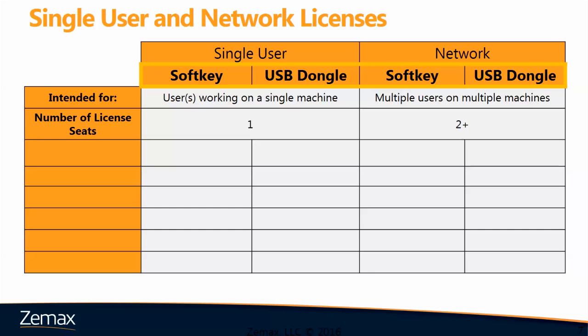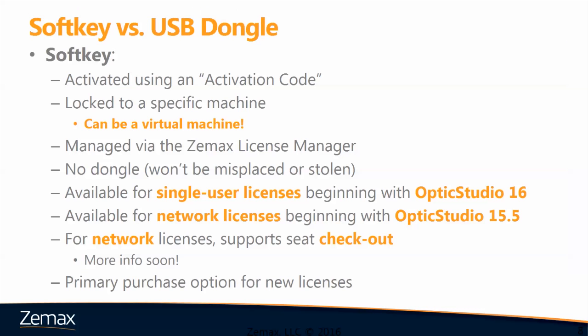Within our licensing options, we have soft key and hard key, or USB dongle, licenses for both the single user and the network versions. A soft key is activated using an activation code, which is sent to you via email after you've completed your purchase. The license is then locked to a specific machine, with the huge benefit that this can also be a virtual machine. The license will be managed via the ZMAX License Manager application, and there's no dongle, so you can't misplace your license or have it stolen. Soft key licenses are available for single user licenses beginning with Optics Studio 16, and network soft key licenses were released beginning with Optics Studio 15.5.